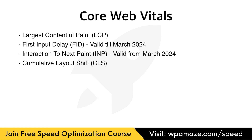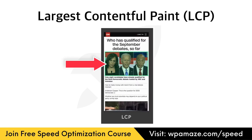Core web vitals primarily focuses on three areas: largest contentful paint, first input delay — which will be replaced with interaction to next paint — and cumulative layout shift, also known as LCP, FID, INP, and CLS. Largest contentful paint measures the time it takes for the biggest image or text block to become viewable within the browser window.